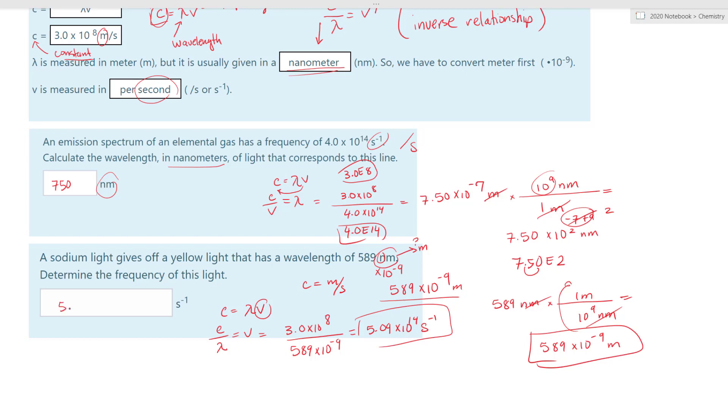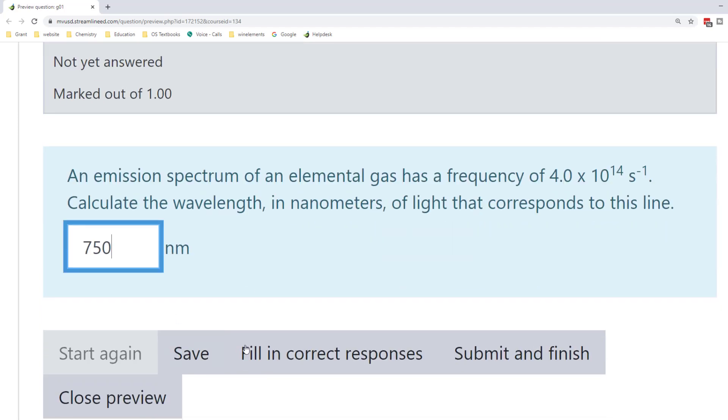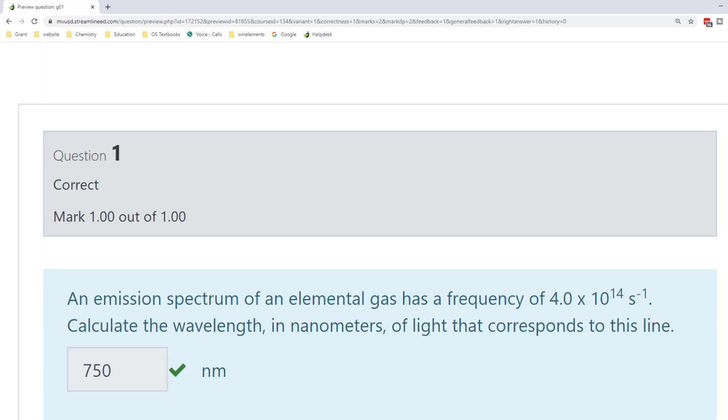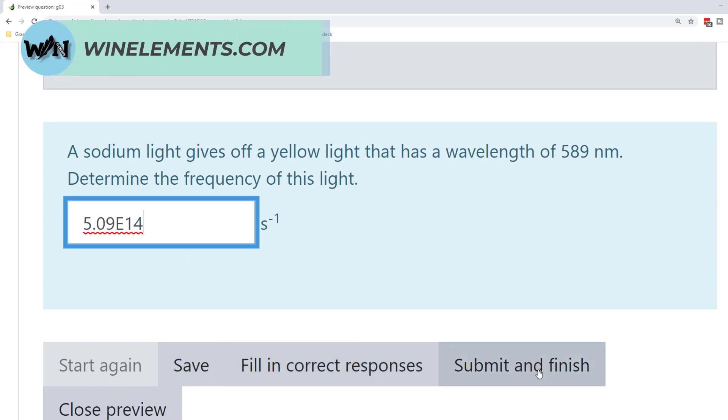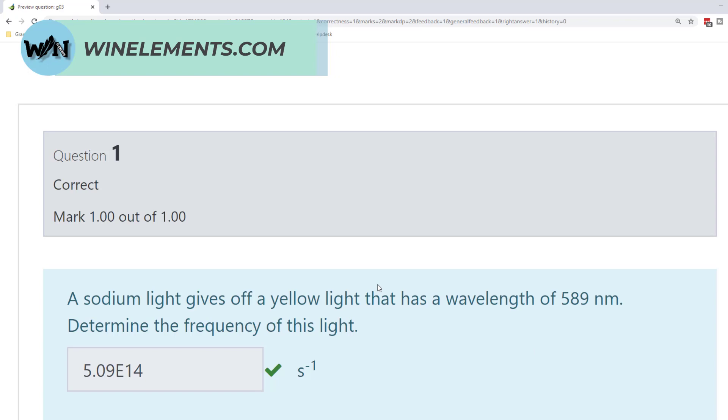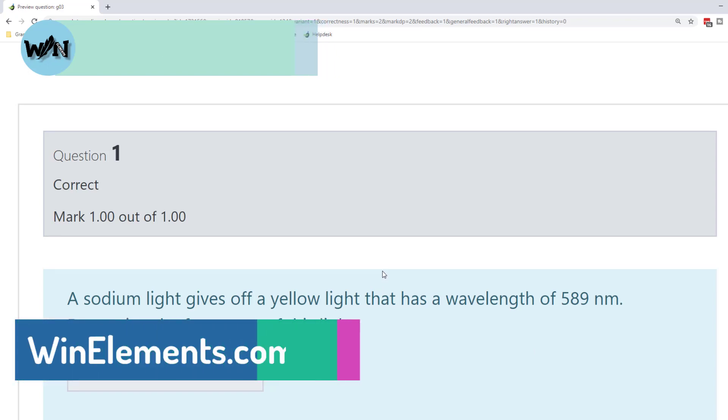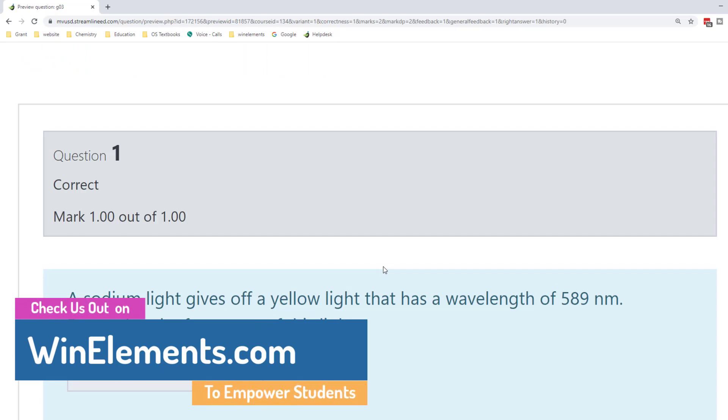So let's go check our answer. So for right here, we have 750 nanometers. There you go. Let's go check the other one. And let's check our second answer, 5.09 E to the 14. And there you go. And as always, if you have any questions, please take a picture of your work, put it on your Google Drive, and share the link on the forum, and we will help you from there. And we'll see you next time on another chemistry video.